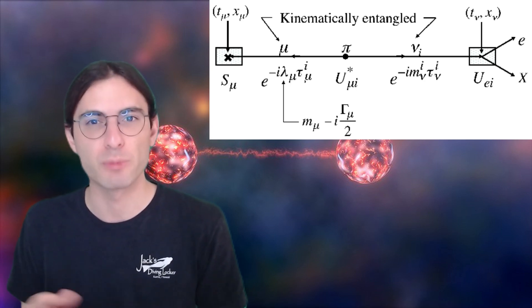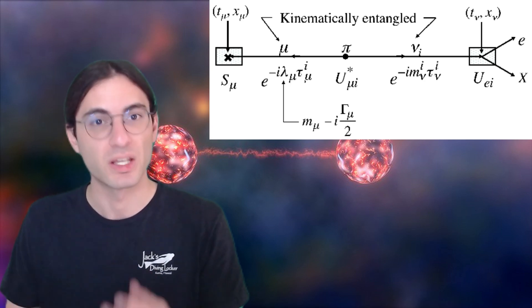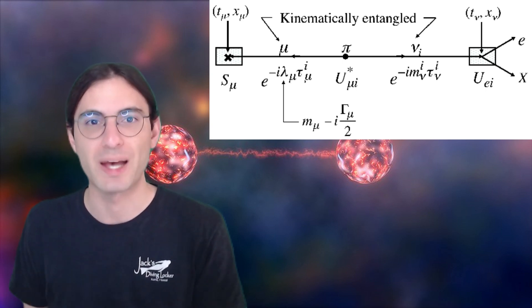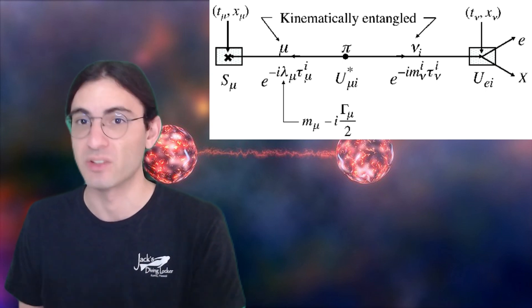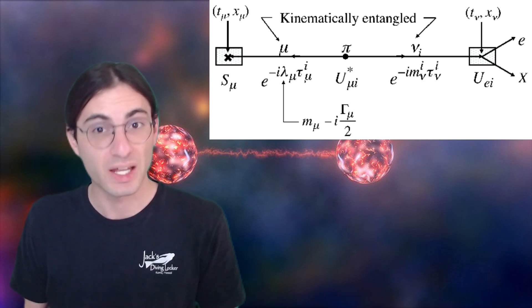So if you measure the muon's momentum and it's high, then, if you could, you would measure the largest mass state of the neutrino. If the momentum is low, then you would measure the low mass state of the neutrino.